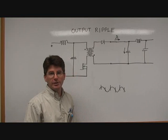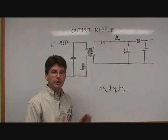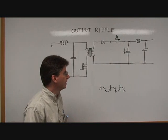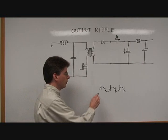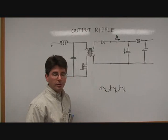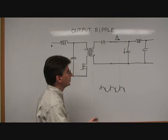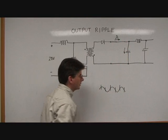Output ripple of the DC-DC converter can include both differential mode and common mode components. The usual waveform will look something like this.